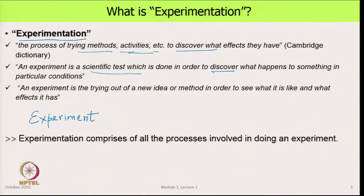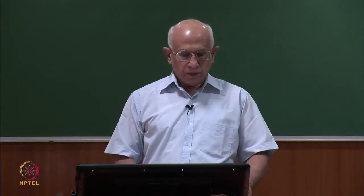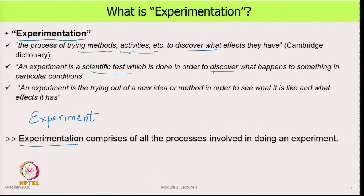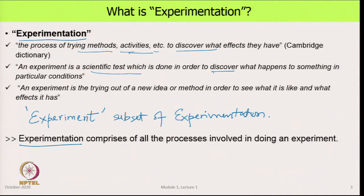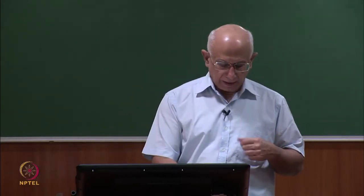A further definition: the experiment is the trying out of a new idea or method in order to see what it is like and what effect it has. So experimentation comprises all the processes involved in doing an experiment. The experiment is a subset of the processes of experimentation. Doing an experiment and taking data is just one part of experimentation.